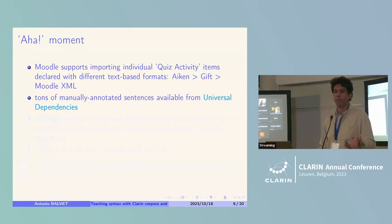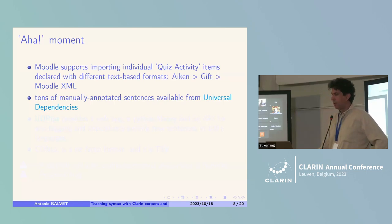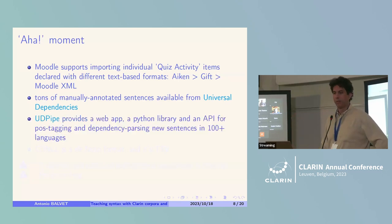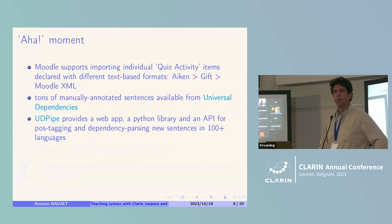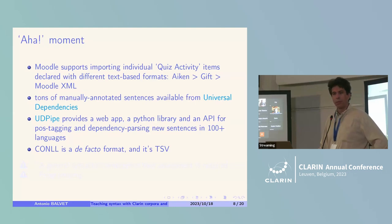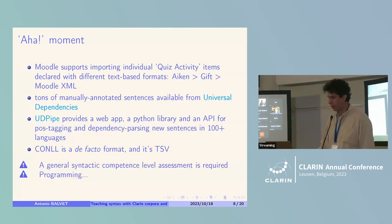Specifically I'll be speaking about French, but there are corpora available for other languages. There are tons of manually annotated sentences available from the universaldependencies.org platform, available through Clarin. There are also very convenient pipelines like UDPipe if corpora are not enough. CoNLL-U is a de facto standard format and it's pretty easy to parse — it's basically a table.